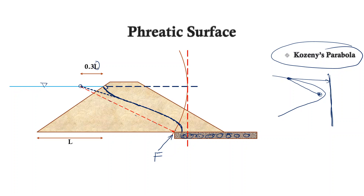The seepage line is the topmost flow line through which water is flowing, and it also represents the groundwater surface inside the dam. Sometimes we need to draw all the other stream lines or flow lines as well — that is done based on a flow net.